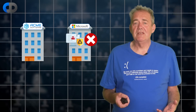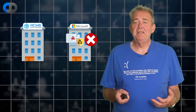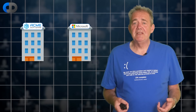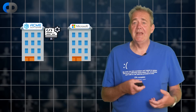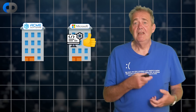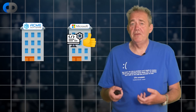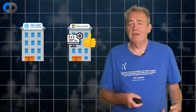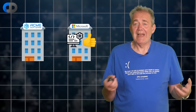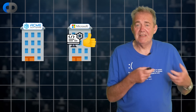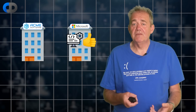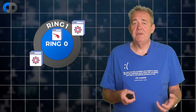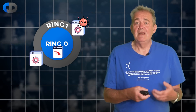If it passes all of these tests, it's given a digital signature that prevents the operating system from complaining and highlighting the risks you're taking if you install and run unapproved unsigned ring 0 code. Inevitably, this adds costs and delays to the process of release for code like this. Not ideal for antivirus software, which needs to be able to release quick updates in response to new attacks in order to keep systems safe.